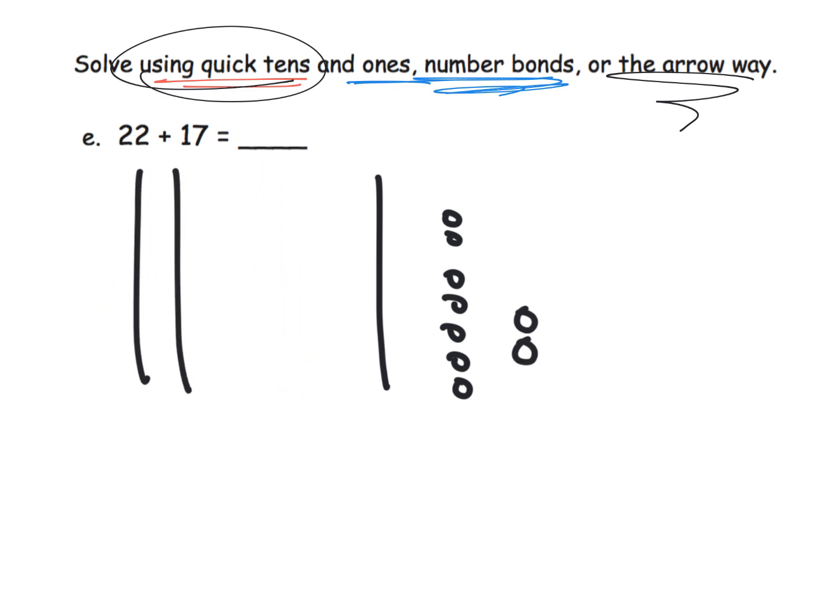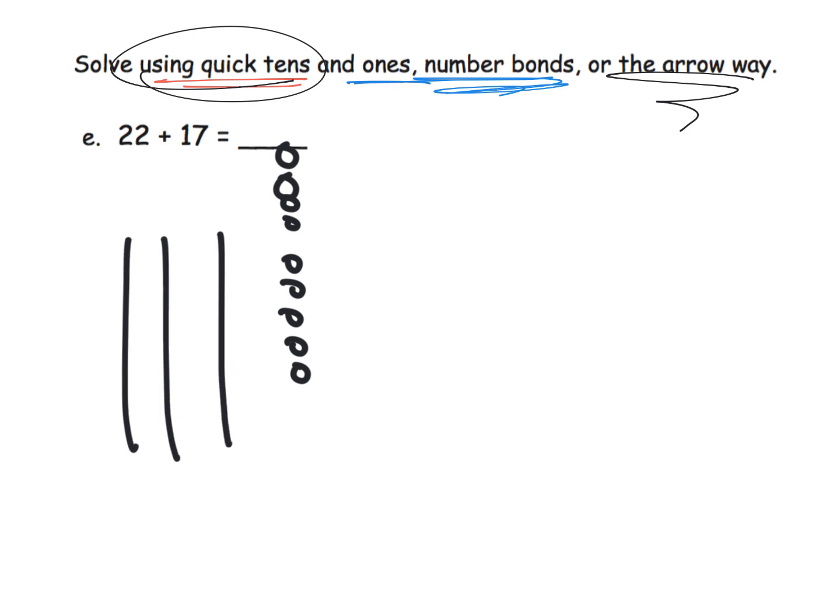By putting our tens together and our ones together, we see that we've got three tens and 1, 2, 3, 4, 5, 6, 7, 8, 9. So the answer is 39, and we get that using the quick tens and ones method.